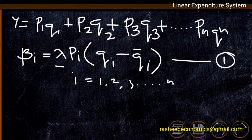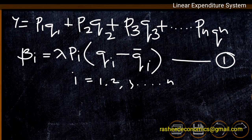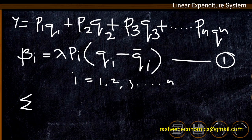Here lambda denotes change, pi denotes the price of the commodity, and qi minus qi_dash means the change in quantity of the commodity consumed. Therefore pi*(qi - qi_dash) is the total change in consumption due to change in total income, represented as beta_i. By normalizing beta_i, we get sigma beta_i where i = 1 to n.